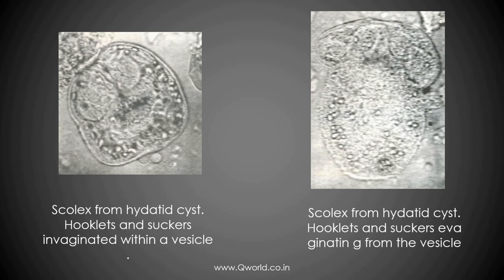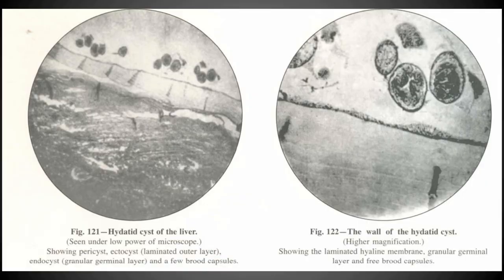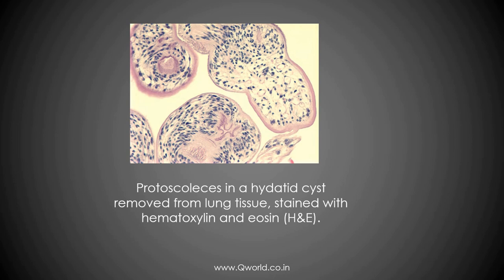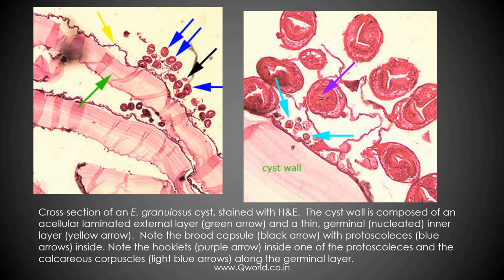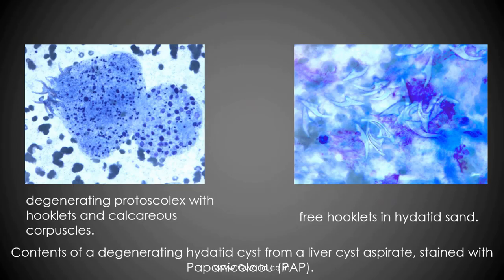The scolices from the hydatid cyst show hooklets and suckers invaginated within the cycle. The second diagram shows the scolices from the hydatid cyst showing hooklets and suckers. These diagrams are all showing the hydatid cyst with pericyst, ectocyst, laminated outer layer, and brood capsules. The wall of hydatid cyst under higher magnification shows free brood capsules. More pictures from biopsies and free hooklets found in hydatid sand at the bottom are also shown.